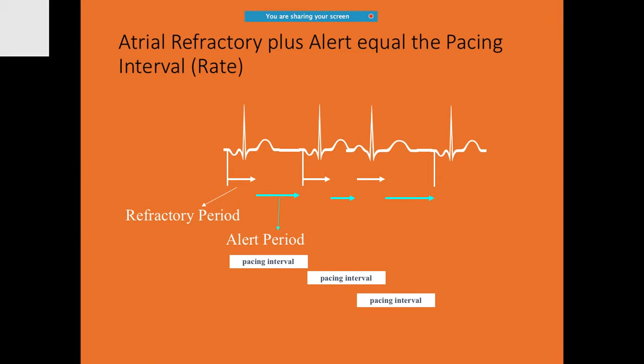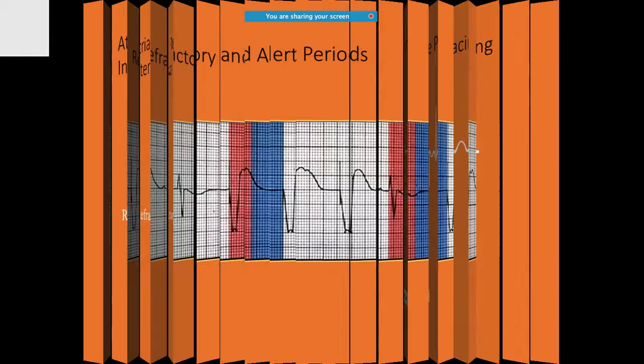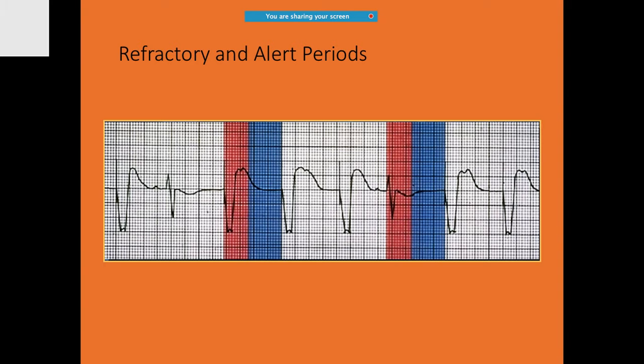In this ECG, you can see the pacemaker is able to both pace and sense the ventricle. There is a refractory period during which it does nothing, followed by an alert period. During the alert period it looks for other activities. The pacing interval consists of two parts: the refractory period and the alert period — shown here with color signals.